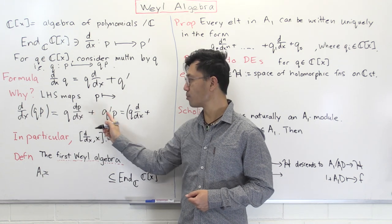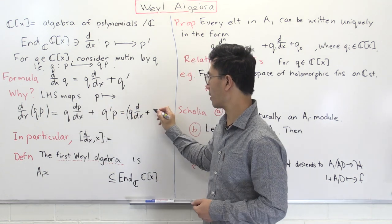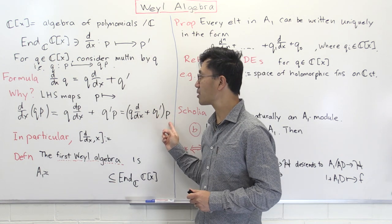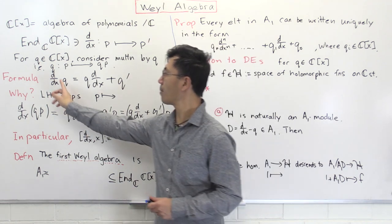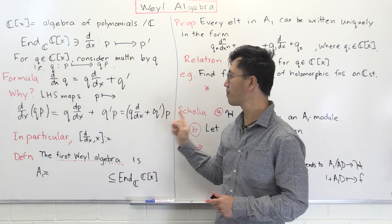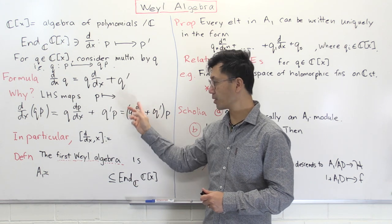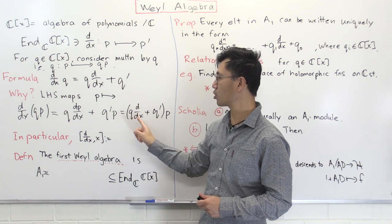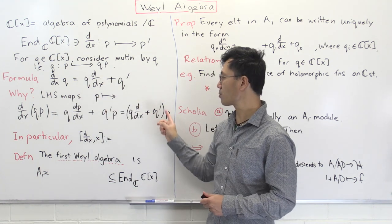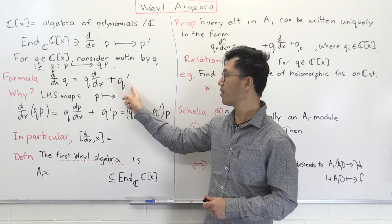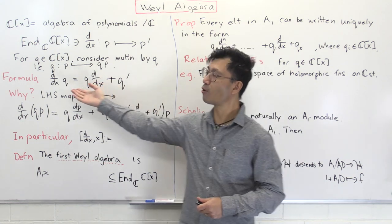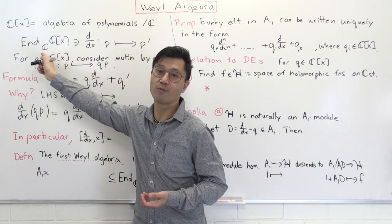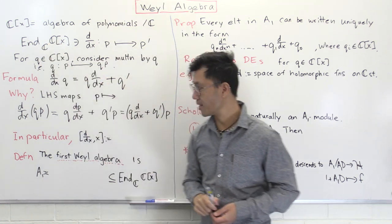So on the left-hand side, what have I done to p? It's the sum of two operations: first you do the derivative then multiply by q, giving q · d/dx; and then you also just multiplied by the derivative of q, which is q'. So this is the beautiful formula: d/dx · q = q · d/dx + q', which occurs when you study this ring of endomorphisms of this function space.